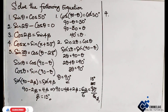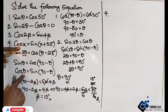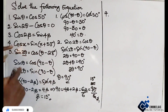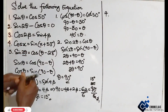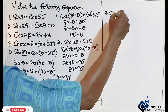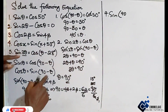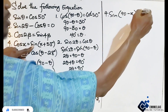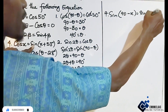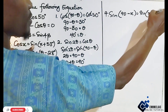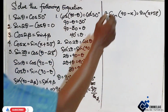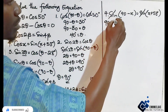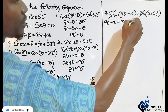For cos x, we connect it using the complementary relation. So cos x becomes sine of 90 minus x, with theta replaced by x. This equals sine of x plus 53 degrees. Eliminating sine, we have: 90 minus x equals x plus 53.